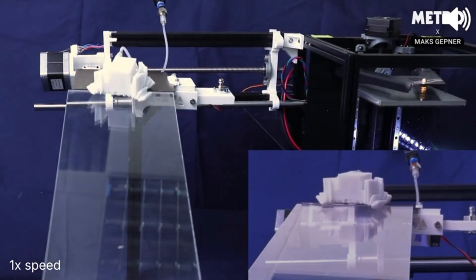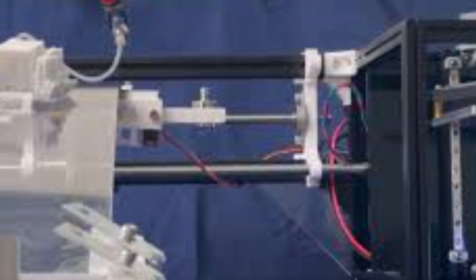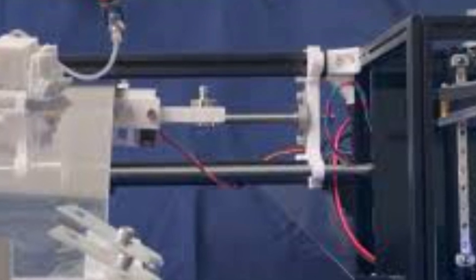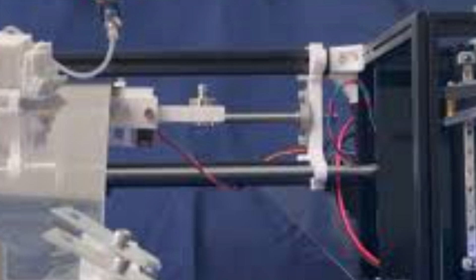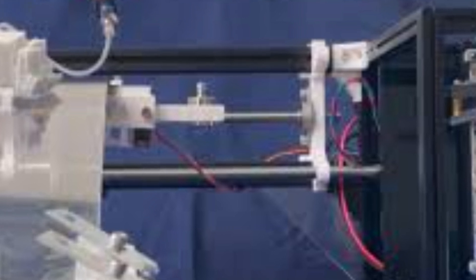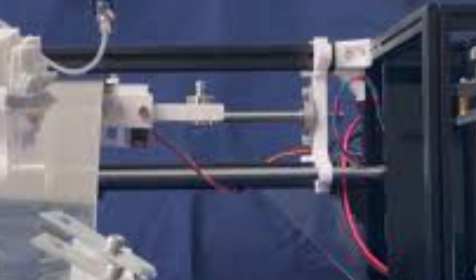But the Flex Printer is different. It uses a special type of plastic that remains gel-like even after being printed, allowing the researchers to create complex shapes and structures that would be impossible with traditional 3D printing.